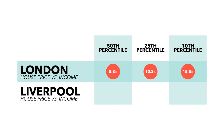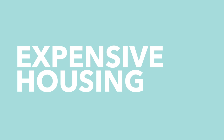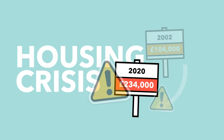In areas with lower median multiples this difference is less pronounced. Liverpool, for example, has a median multiple of 3.7, a 25th percentile multiple of 3.8, and a 10th percentile multiple of 5. That means the poorest people in London have to pay nearly twice as much in housing costs as the median resident, whereas the poorest in Liverpool only pay 35% more. Essentially, when housing is expensive, it's most expensive for the poor, making them even poorer in relative terms.